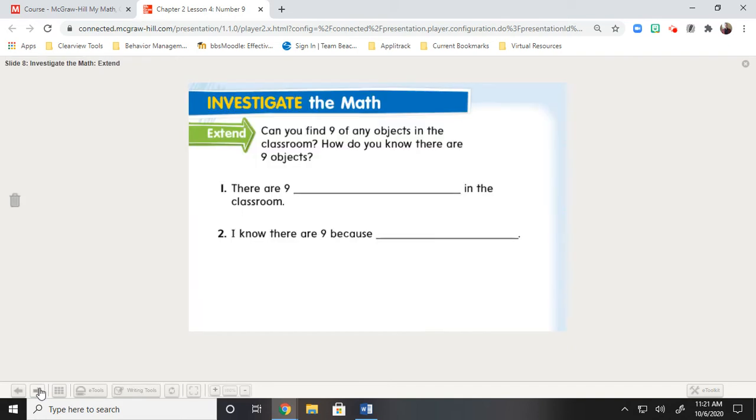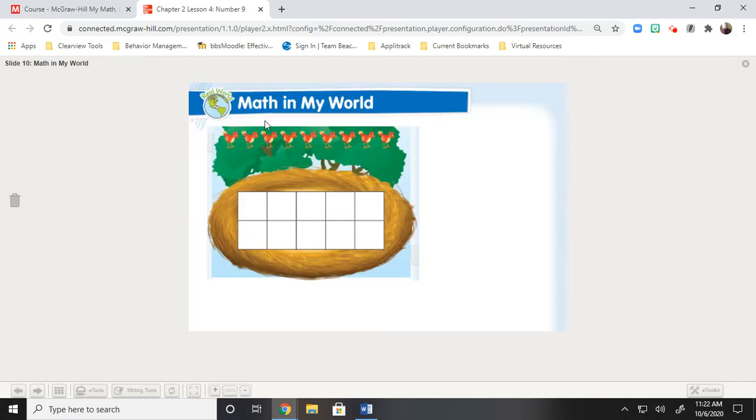Can you find 9 of any objects in the classroom? How do you know there are 9 objects? So, for me, one thing I can check off the top of my head is I have some markers here and I can count the markers. 1, 2, 3, 4, 5, 6, 7, 8, 9. Well, I have more than 9, but I do have 9 markers in my classroom. I know that there are 9 because I counted them one at a time. Look at that.